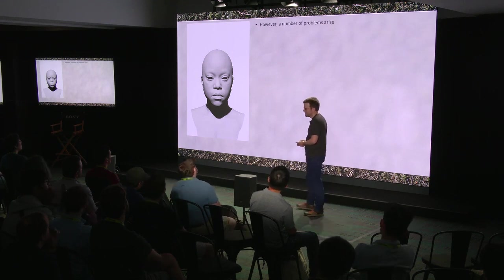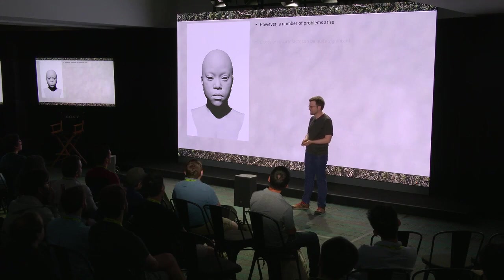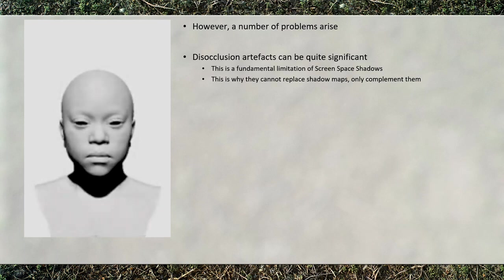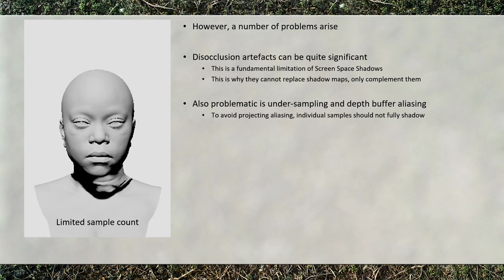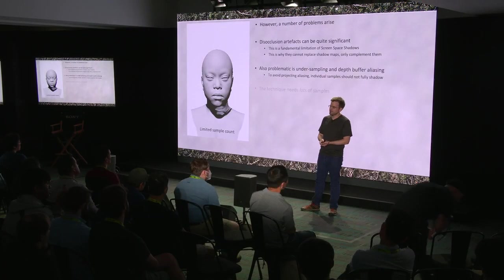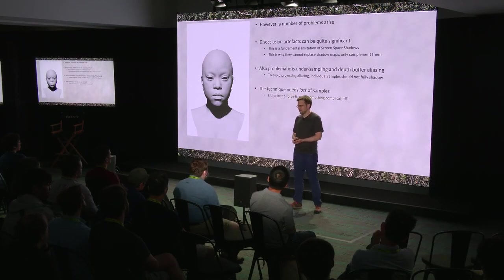What goes wrong? First: disocclusion. Disocclusion is an unavoidable issue and is why screen space shadows cannot replace other shadowing techniques — they can only complement. Portions of geometry literally not on screen cannot cast a shadow. Also problematic is undersampling. A less obvious problem is depth buffer aliasing — we have aliasing in our depth buffer and we're projecting it into the world. That means a single sample should not produce a full shadow. The ultimate conclusion is that you need lots and lots of samples for this to work well, through brute force or smarter temporal/jittering approaches. We brute forced it.